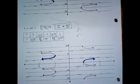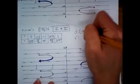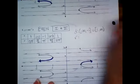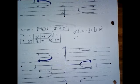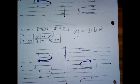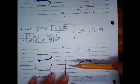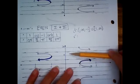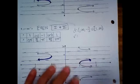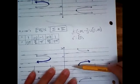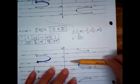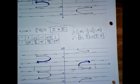Domain: negative infinity to negative 1, union 1 to infinity — same as cosecant; it's what the range was before, now it's the domain. The range is going to look really weird because we're only taking the highlighted part. Going downwards to upwards, we start at 0 and go all the way up to pi — zero to pi — but we have to leave out pi over 2 because of the asymptote.